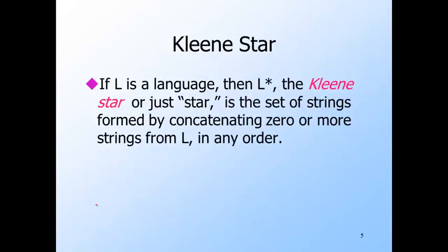The Kleene star is probably something you're least familiar with. If L is a language, then L star — called the Kleene star or just the star operator — is the set of strings that you can form by concatenating zero or more strings from L in any order. Incidentally, Stephen Kleene was the fellow who invented regular expressions and showed that they described the same languages that finite automata described.